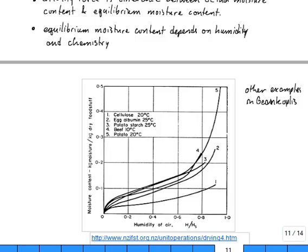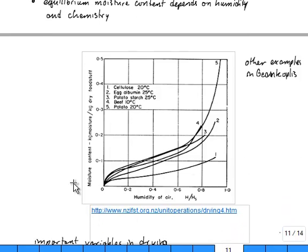Here is a little chart pulled from this website that talks about equilibrium moisture contents for a couple of different food products. So, you've got egg albumin, potato starch, beef, potato, and cellulose.